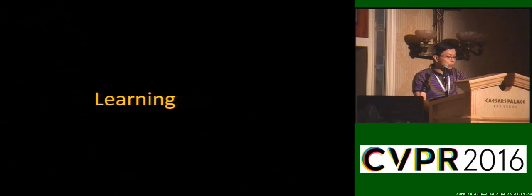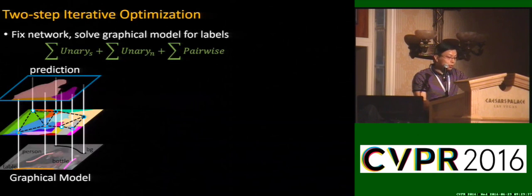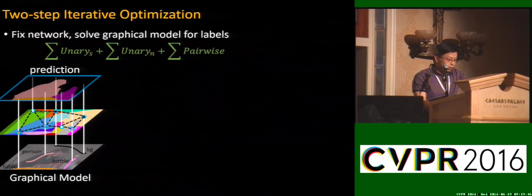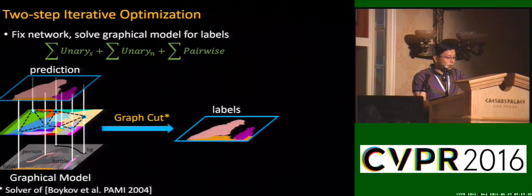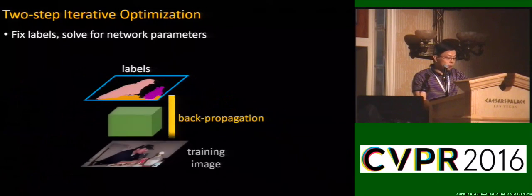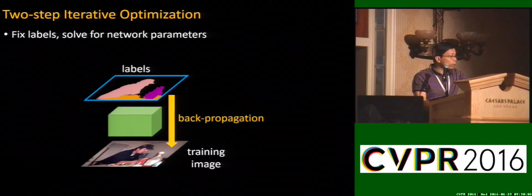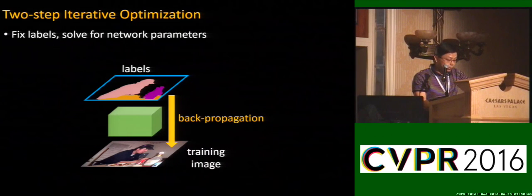To perform semantic segmentation, we determine the parameters of the fully convolutional network by learning in a two-step iterative process. In the first step, we use current network parameters to obtain a segmentation prediction of the training image, then apply graph cuts to solve for the labels of all superpixels. Given the superpixels determined, we follow conventional back propagation to optimize the network, using the propagated labels as supervision. These two modules iterate, and the network in the final iteration is used for segmentation during testing.